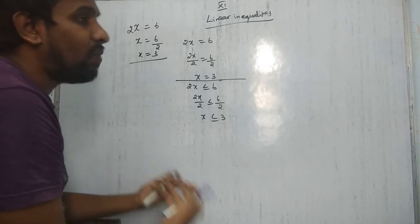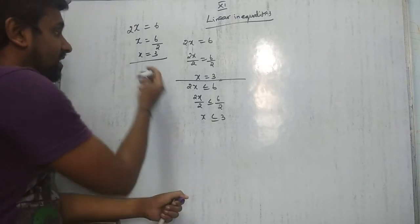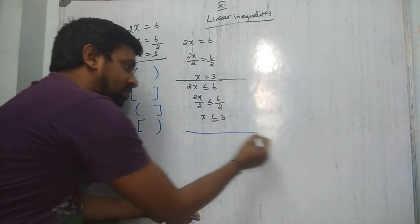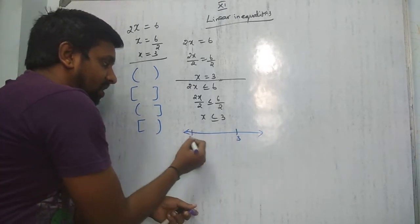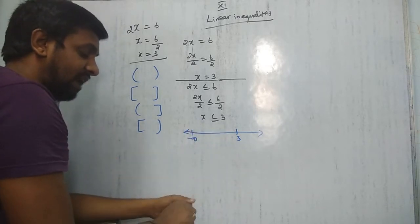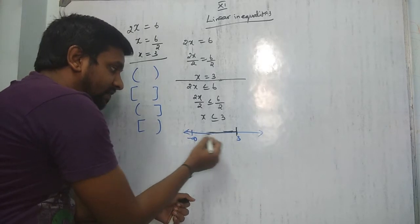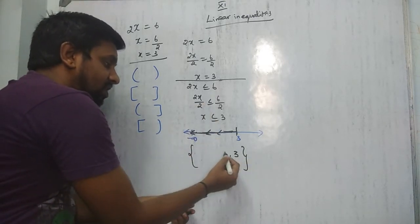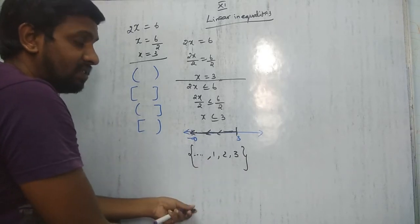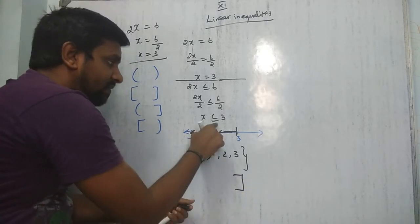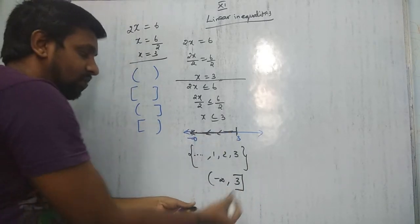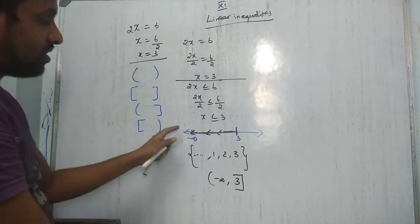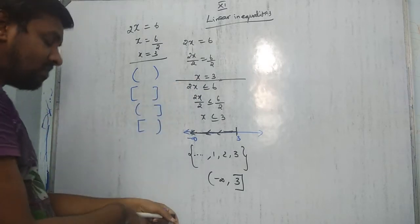In chapter 6 we covered intervals: open on both sides, closed on both sides, open-closed, and closed-open. For x ≤ 3, draw a number line, place 3, and shade from minus infinity up to and including 3. Since we include 3, use a closed bracket. The interval is written as (-∞, 3]. If open, you would not include 3. These four interval symbols are very important for all inequality problems.